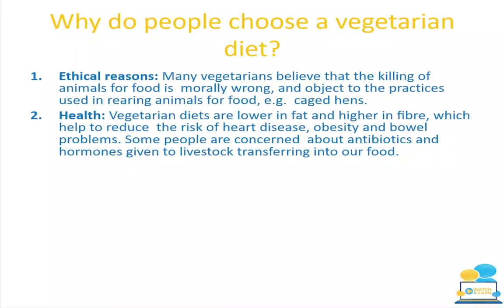The practices used in rearing cattle produce methane (CH4), and a lot of water and extra food is given to livestock. The processes of getting meat ready, packed and sold uses many natural resources that aren't needed on a vegetarian or vegan diet. The second reason is health — vegetarian diets are lower in fat, containing mostly unsaturated fat, which is good for you.